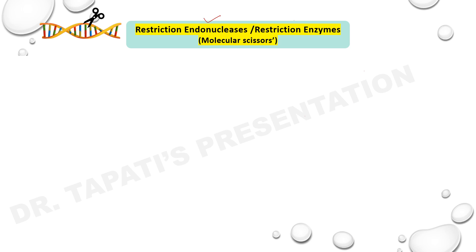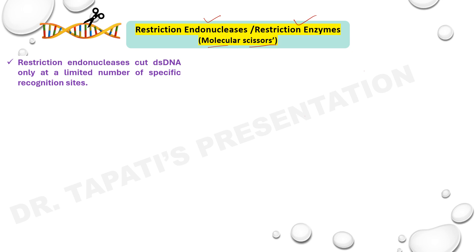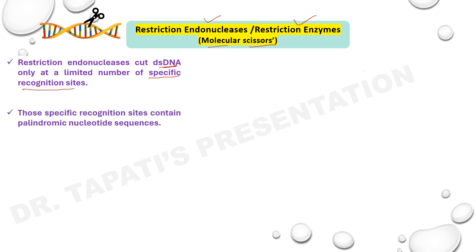Restriction endonucleases, or restriction enzymes, are very important enzymes required for DNA cloning. These are also known as molecular scissors. These enzymes cut double-stranded DNA only at a limited number of specific recognition sites. Those specific recognition sites contain palindromic nucleotide sequences — sequences of base pairs that read the same on both strands in the 5' to 3' and in the 3' to 5' directions.